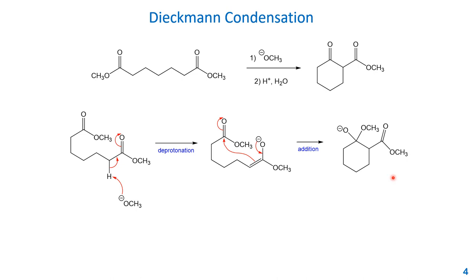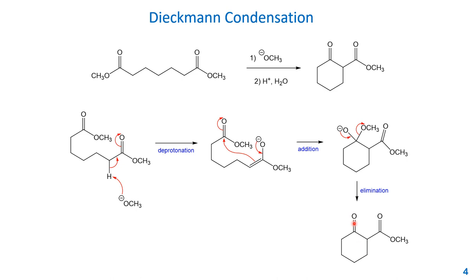This intermediate is very similar to the other examples. The next step is elimination: the oxide pushes the electron back and kicks off the methoxide as the leaving group, regenerating the catalyst. The neutral product still generates an enolate, so you need to use acid to protonate the enolate to get the final neutral product — a beta-ketoester with a six-membered ring formed.